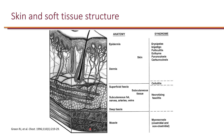It's important to consider the anatomy of skin and soft tissue structure when discussing skin and soft tissue infections. You can think of the layers here. At the very top, we have skin. Under the skin is the subcutaneous tissue, and then under that is muscle. Within skin, we can think of epidermis and dermis — 'epi' means above, so epidermis is above dermis.